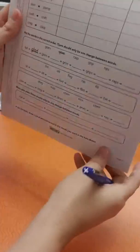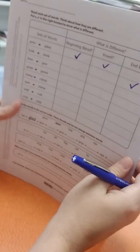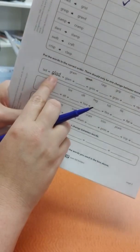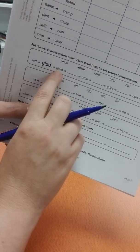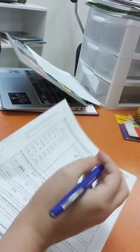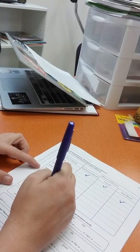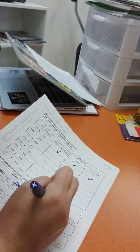Then down here it says put the words in the correct order. There should only be one change between words. So they have lad changes to glad. So they only added that G. Now we want to change glam to gram. We're only going to change the L to the R.